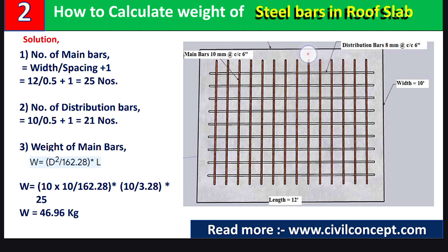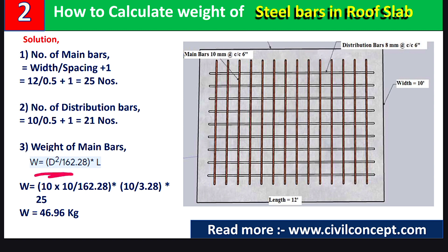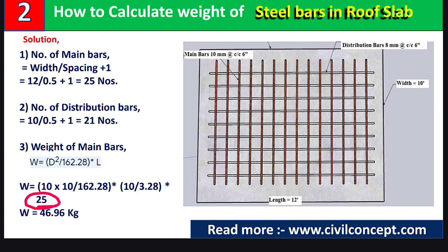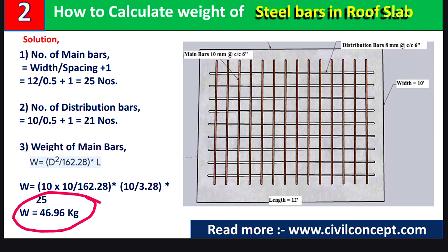Note: we are not subtracting the clear cover here — this is just to demonstrate the weight calculation method. So W equals 10 times 10, divided by 162.25, multiplied by the length in meters, multiplied by 25 (total number of main bars). After calculating, the weight of main bars equals 46.96 kg.